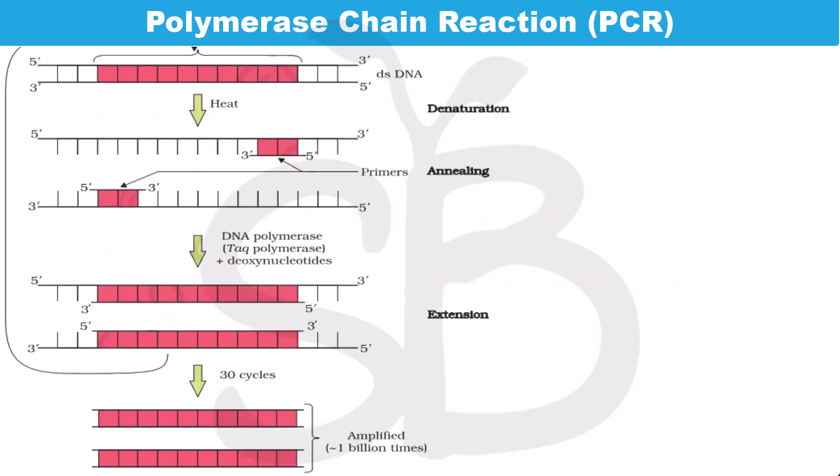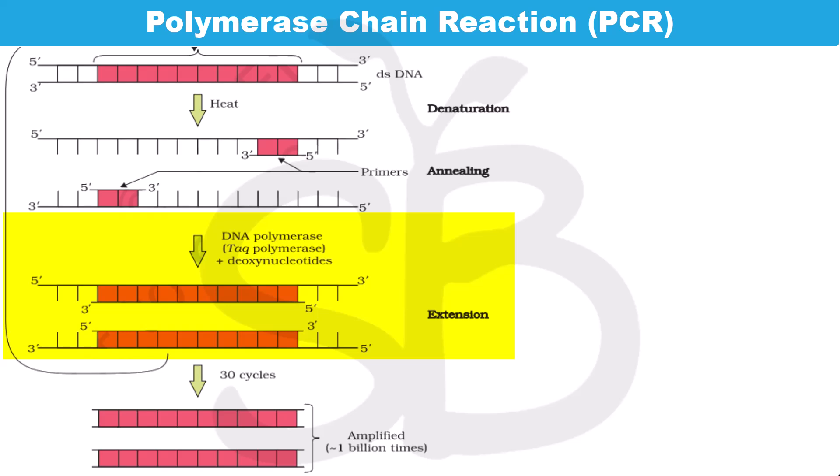The polymerase chain reaction has three important steps: denaturation, annealing, and extension.